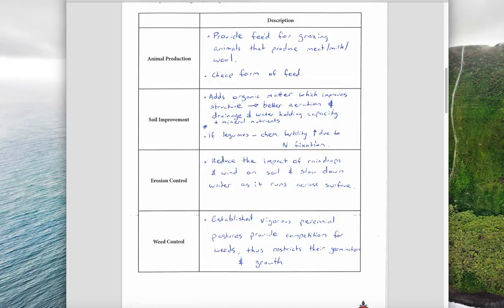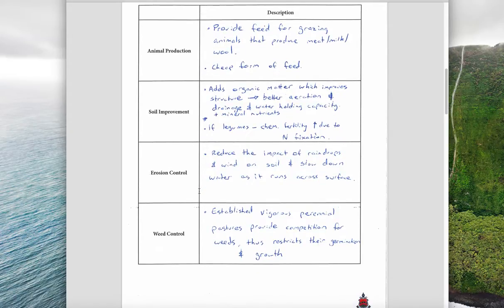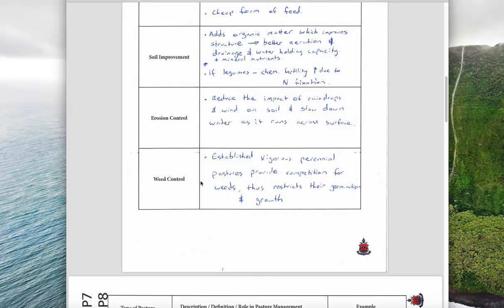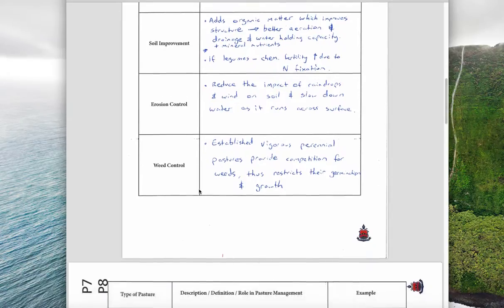With erosion control, they reduce the impact of raindrops and wind on the soil and slow down water as it runs across the surface. With weed control, if you have a pasture growing that will prevent other things from growing that you don't want. A good well-established pasture will help prevent weeds from growing and germinating.